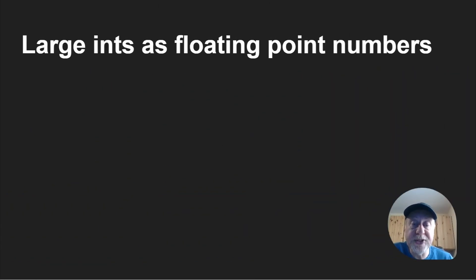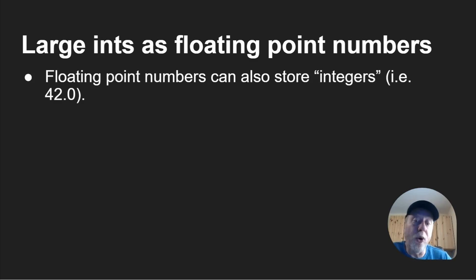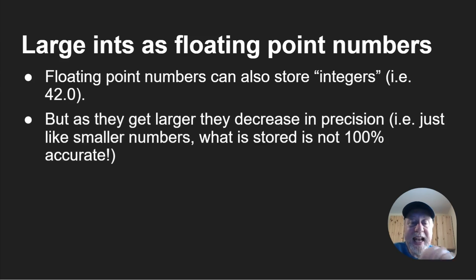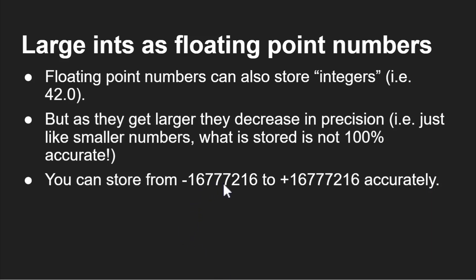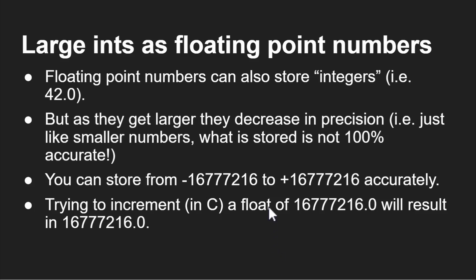Floating point numbers can also store whole numbers — integers — so for example 42 would be 42.0 as a float. But as they get larger, they decrease in precision, just like with decimal places. You can accurately store from minus 16,777,216 to positive 16,777,216 and get exactly that number stored. But if you write a C program with a float at that value and increment it — f++ — it won't increment. It'll stick at 16,777,216 no matter how many times you increment it.